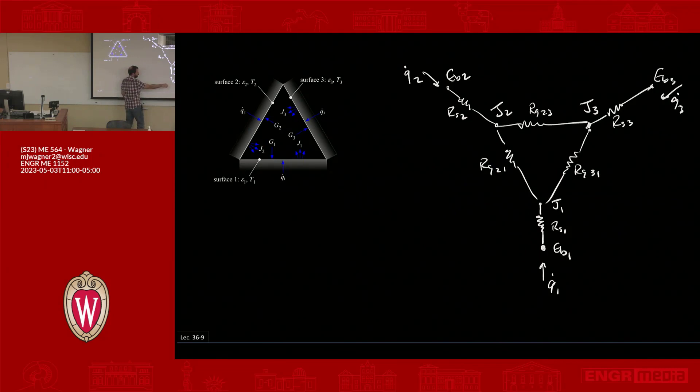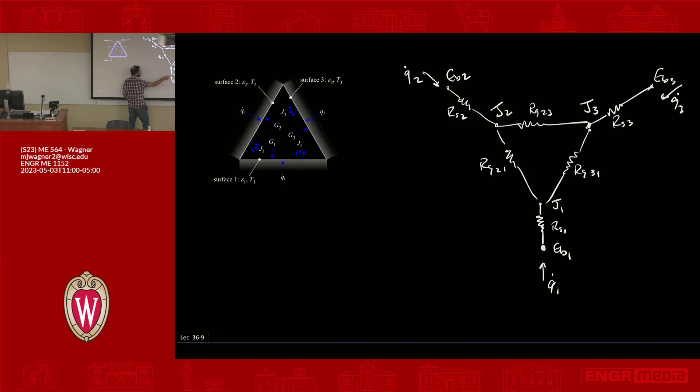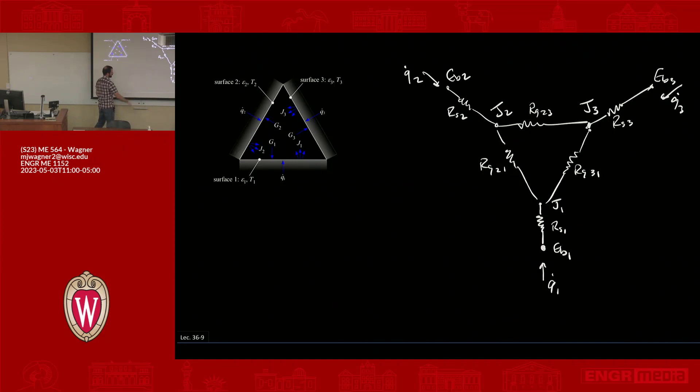A quick note on nomenclature: Q-dot1 is the heat flow across surface one from E_B1 to J1. Past J1 it can split. If we say Q-dot12 or Q-dot13, those correspond to components going across the individual geometric resistances. So Q-dot1 would be comprised of Q-dot21 plus Q-dot31 — the two-index Q-dots are fractions of the single-index Q-dot.